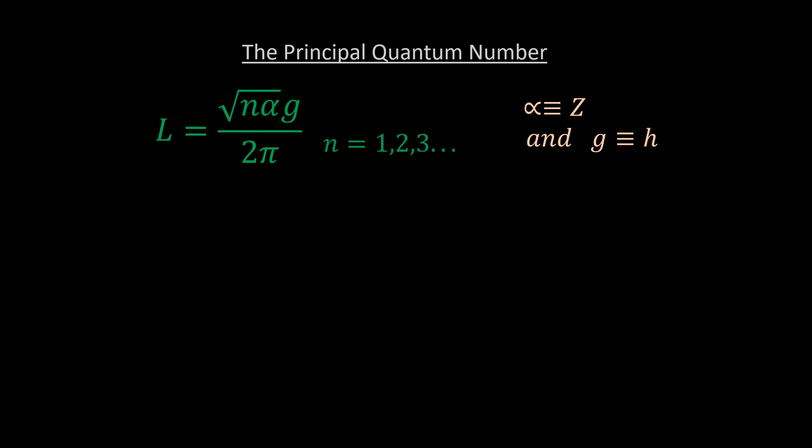n runs from 1 to infinity. If we let n to be equal to eta squared where eta is a positive integer like n, the momentum equation becomes eta h on 2 pi, eta equal to 1, 2, 3 and so on. We have let alpha to be equal to 1 just to keep things simple. I have interchanged g with h so that you should be able to recognize that this is the Bohr equation and by direct extrapolation, eta is the principal quantum number.